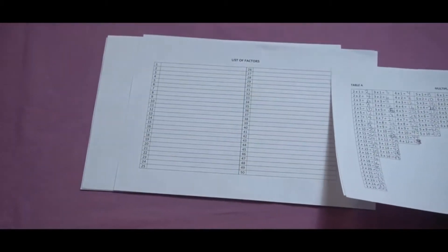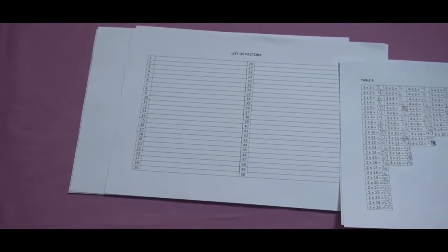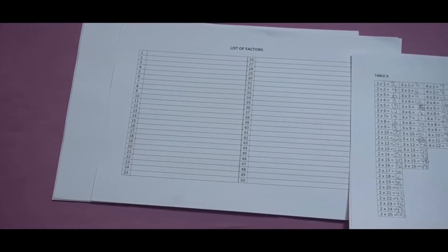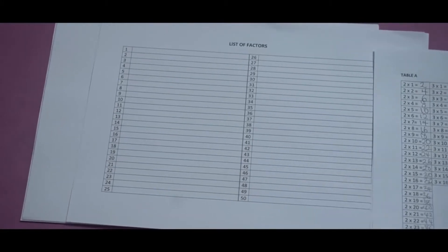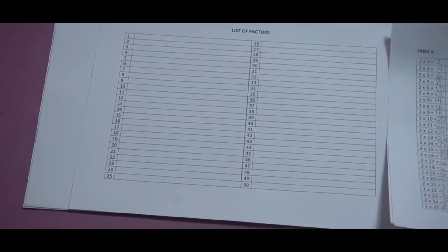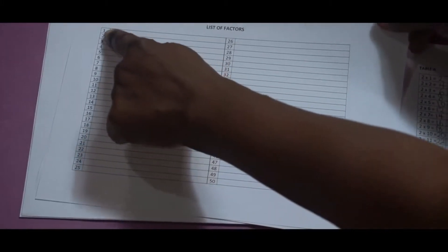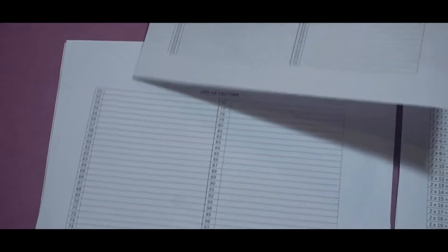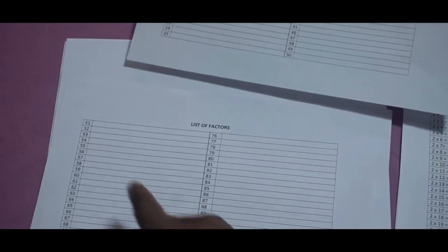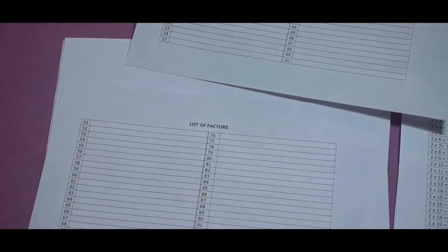And you know what? We are going to have your own collection of factors from 2 to 100. It will be your own list of factors. We are going to use this sheet. You can see we have 1 all the way to 50, and then here we have 51 all the way to 100.